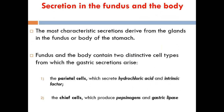The secretions in the fundus and the body — different parts of the stomach produce different secretions. The most characteristic secretions are derived from the glands in the fundus and body of the stomach. There are two types of cells: parietal cells producing hydrochloric acid and intrinsic factor, and chief cells producing pepsinogen and gastric lipase.